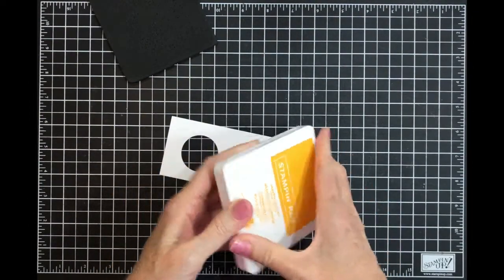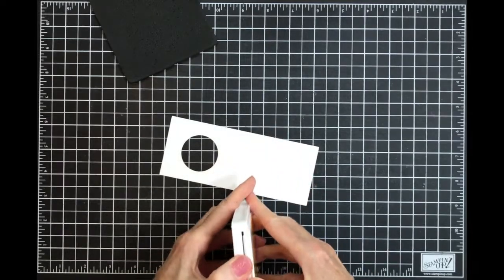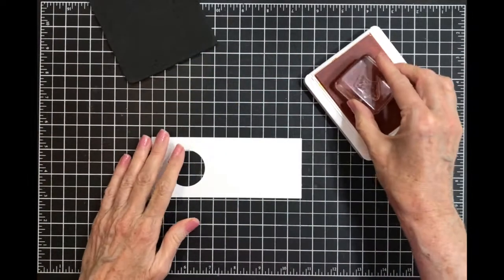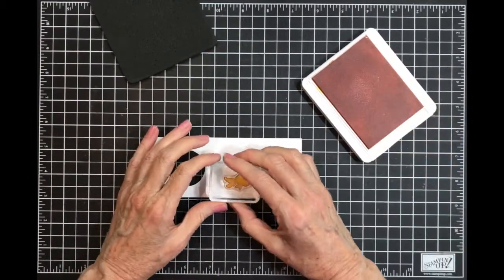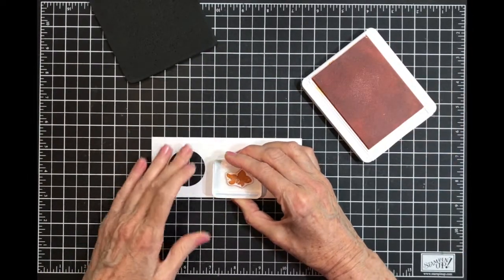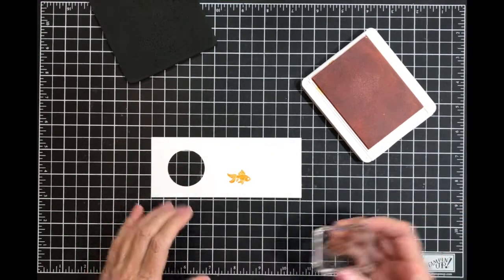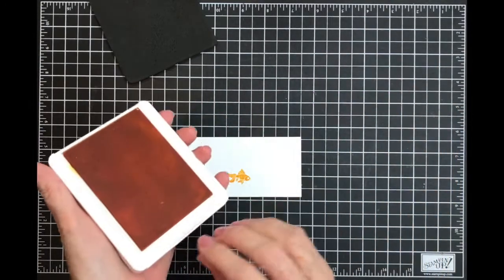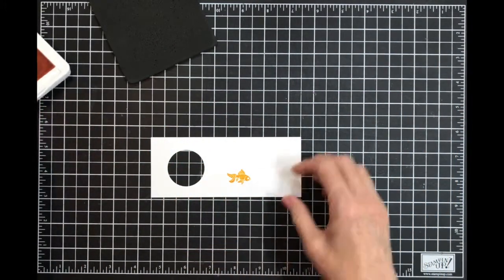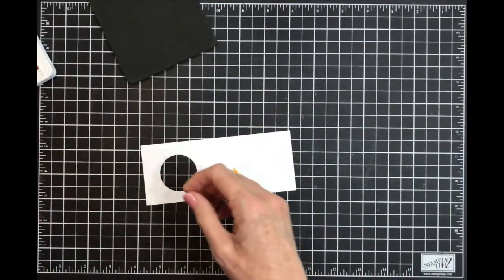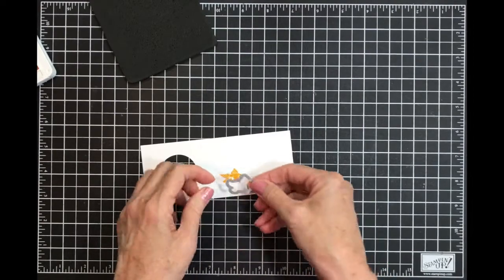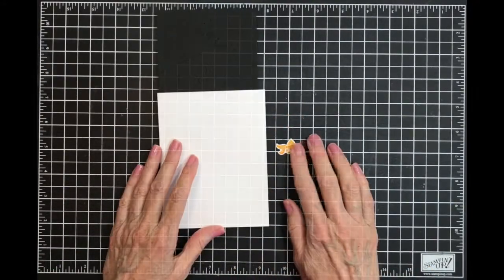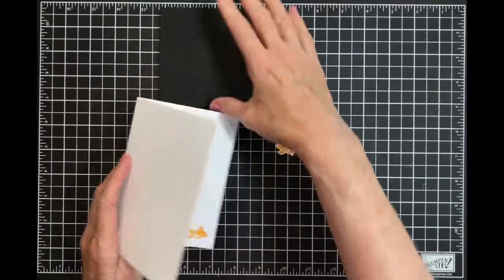First thing we want to do is stamp our goldfish. I'm going to stamp my little fish - isn't he cute? I love his little lips. Now I need to use my die and cut him out. Okay, I got my fish cut out.